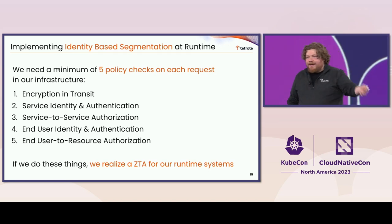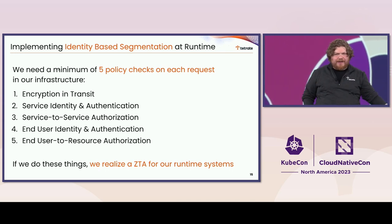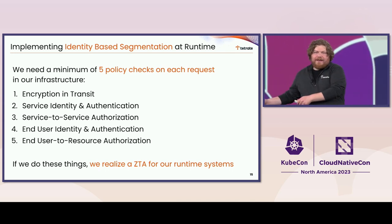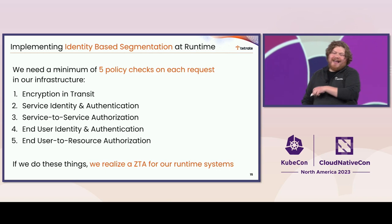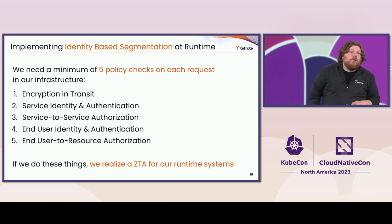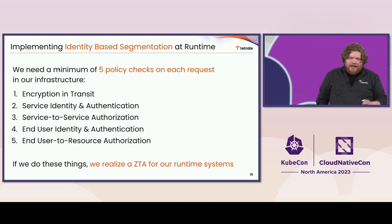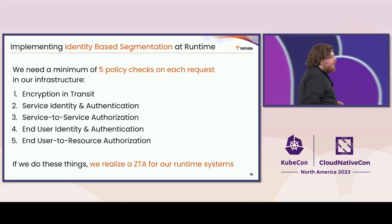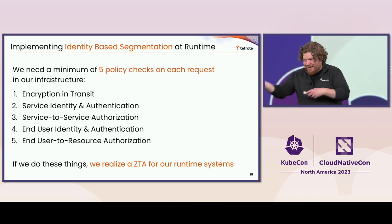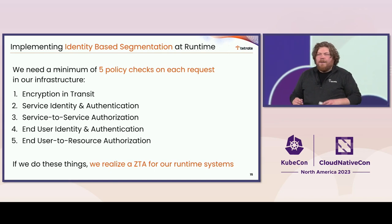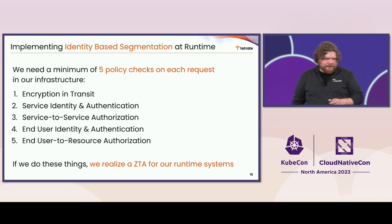Then I need to identify and authenticate services. I need to use that authenticated service identity to authorize service-to-service communication. And I want to do the same for the end user — at every hop, authenticate that end user and authorize their access to resources. We argue in 800-207A that if you're doing those five things, you're achieving a zero-trust runtime. Going back to our working definition: we want to mitigate what an attacker can do in space and in time. Doing these five things for any of your services helps mitigate what that attacker can do.